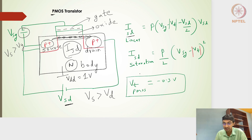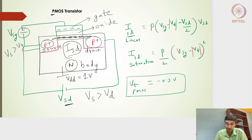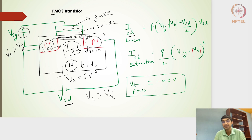For the NMOS transistor, if VDS is smaller than VGS minus VT, then it is in the linear region. If VDS goes above VGS minus VT, we have a pinch-off region — the saturation region — where the channel near the drain gets disconnected and the current no longer increases.